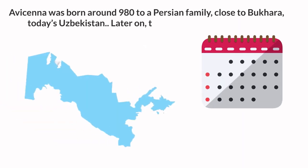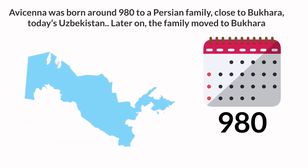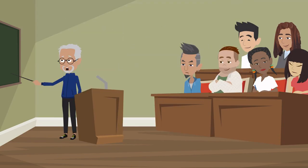Avicenna was born around 980 to a Persian family close to Bukhara, today's Uzbekistan. Later on, the family moved to Bukhara, the center of learning where he got his education by many great, well-respected scholars, as his father was a governor.